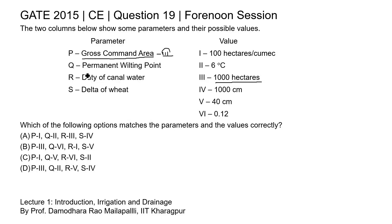The next parameter is permanent wilting point, which is the point at which plants can no longer extract water for their growth. It is defined in percentage. Looking at the table, the value 0.12 represents 12 percent, which is a water content value. So the correct match for Q (permanent wilting point) is 6.